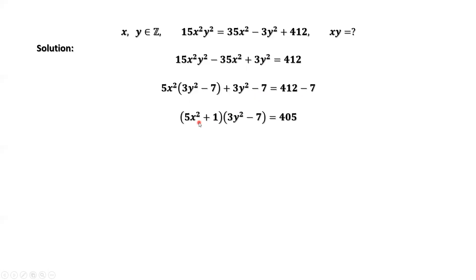We continue to factor the left-hand side. Then we have (5x² + 1)(3y² - 7) = 405. We do the prime factorization for 405. Then we have the right-hand side is 3⁴ × 5.